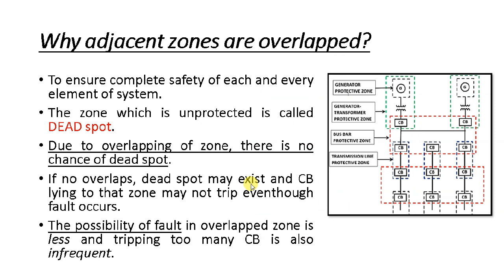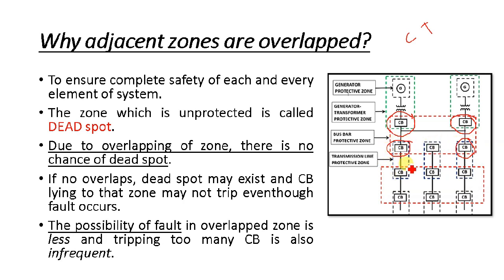Now let us understand this diagram. The boundary of the protection scheme — for the generator and transformer protective zone, for the generator, for the bus bar, and for the transmission line — these boundaries are decided by the location of the current transformer (CT). You can see that many protective zones overlap. The bus bar protection zone and the generator-transformer protection zone overlap in certain parts. So what is the need for overlapping? Why do we go for the overlapping of protection zones?